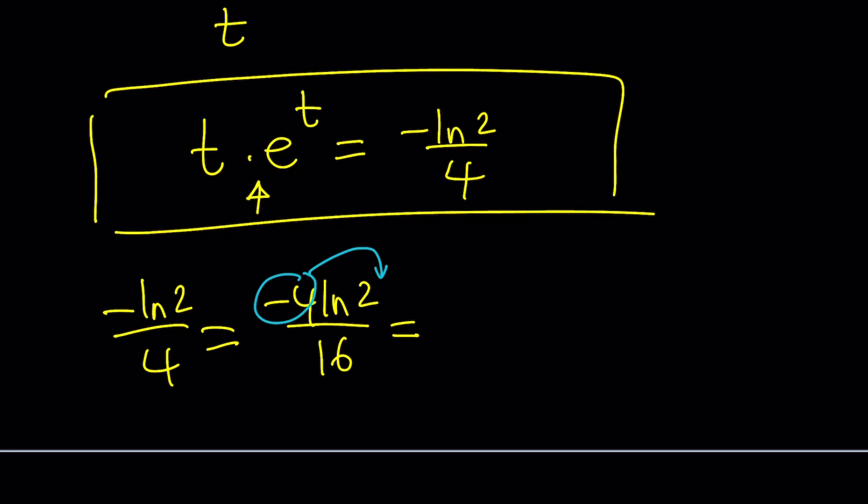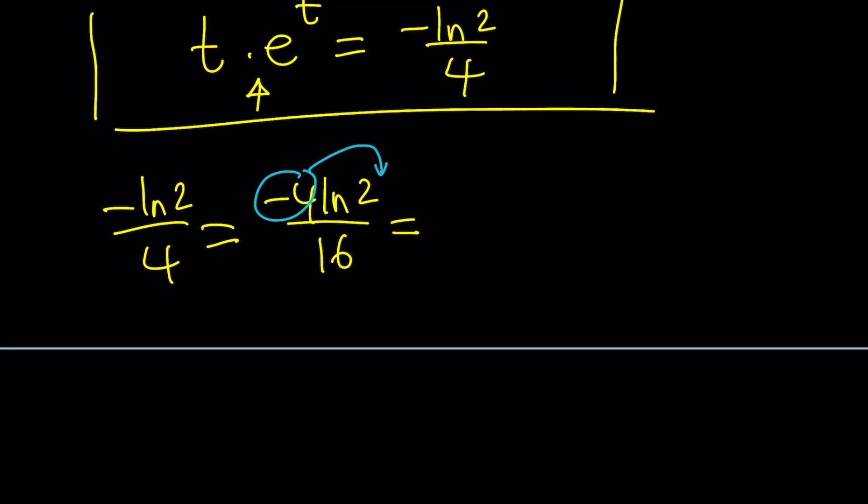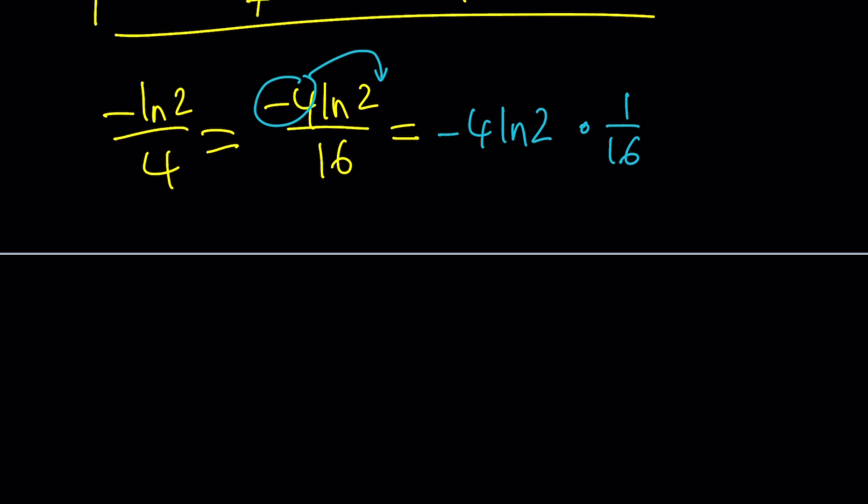Since I have the negative 4 already, I can write this as negative 4 ln 2 multiplied by 1 over 16. Now I'm going to do something for 1 over 16. Let's leave negative 4 ln 2 alone, but write this 1 over 16 as e to the power ln 1 over 16.